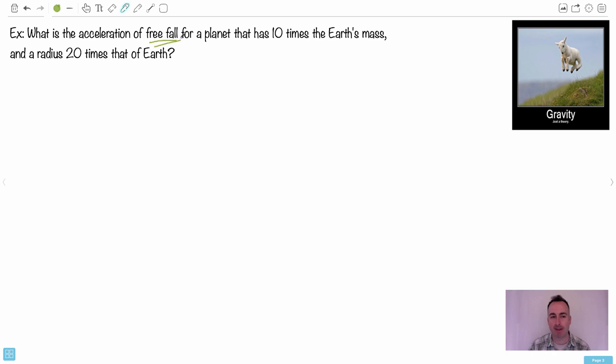Let's look at some examples. We've got what's the acceleration of free fall for a planet that has 10 times the Earth's mass and a radius 20 times that of Earth. If you want the acceleration due to free fall, isn't that g? You might think it's 9.81, but not on this planet. So we use this formulation for g: g equals F over m, which is GM over R squared. Now for this planet here, it's G times 10 times the mass of the Earth, divided by 20 times the radius of the Earth squared.